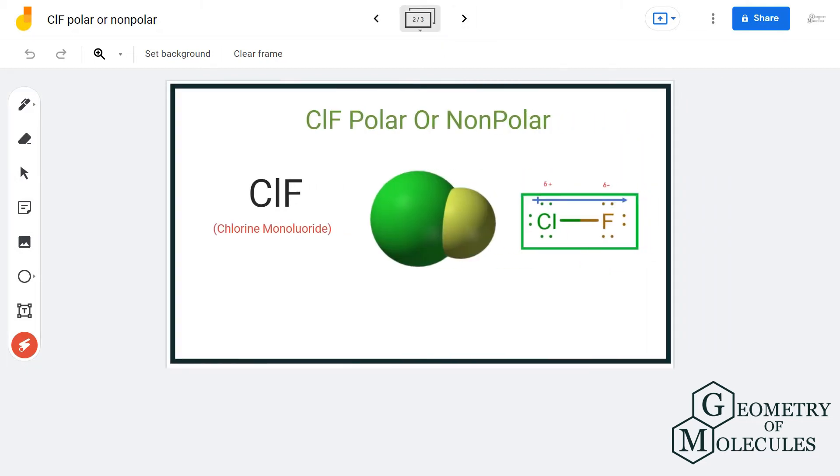Because if you know, fluorine is the most electronegative atom here and it has an electronegativity value of 4.0, whereas for chlorine it is 3.2. This difference is higher than 0.4, which is 0.8, and obviously the bond between chlorine and fluorine atom is a polar bond.